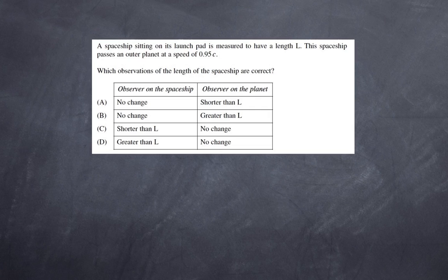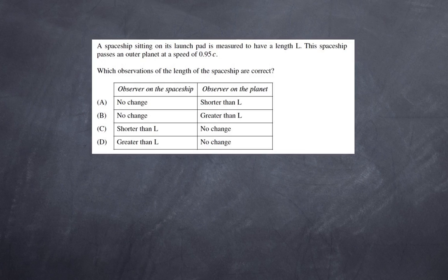A spaceship sitting on its launch pad is measured to have a length L. This spaceship passes an outer planet at a speed of 0.95c. Which observations of the length of the spaceship are correct? There are a number of important consequences if the two postulates are correct: time dilation, length contraction, mass dilation, and the concept of simultaneity.